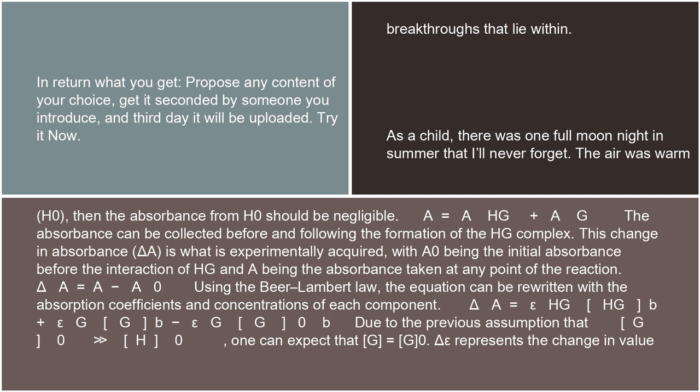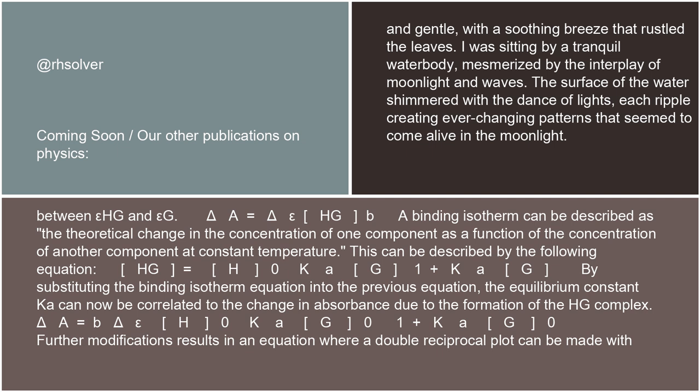Delta A = ε_HG·[HG]·b + ε_G·[G]·b − ε_G·[G0]·b. Due to the previous assumption that G0 is much greater than H0, one can expect that G ≈ G0. Delta epsilon represents the change in value between ε_HG and ε_G. Therefore: Delta A = Δε · [HG] · b.